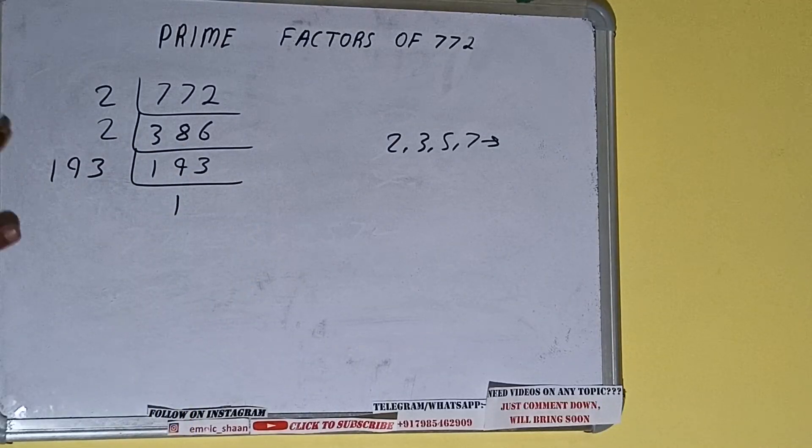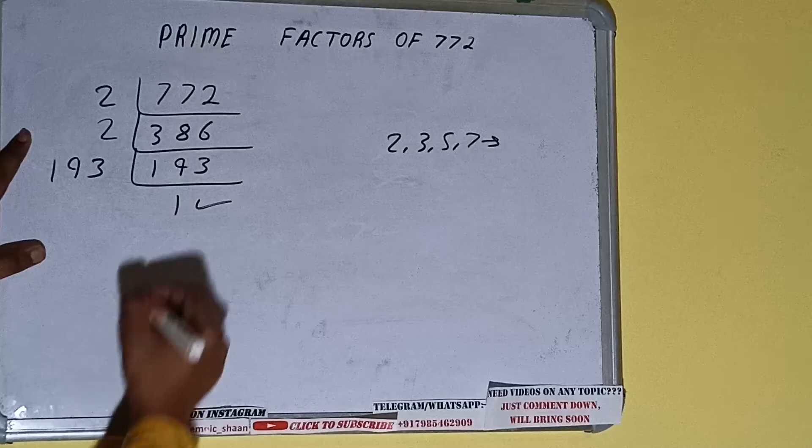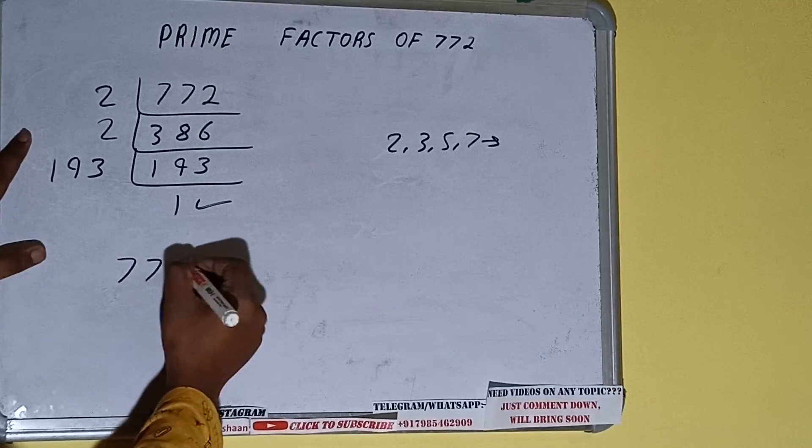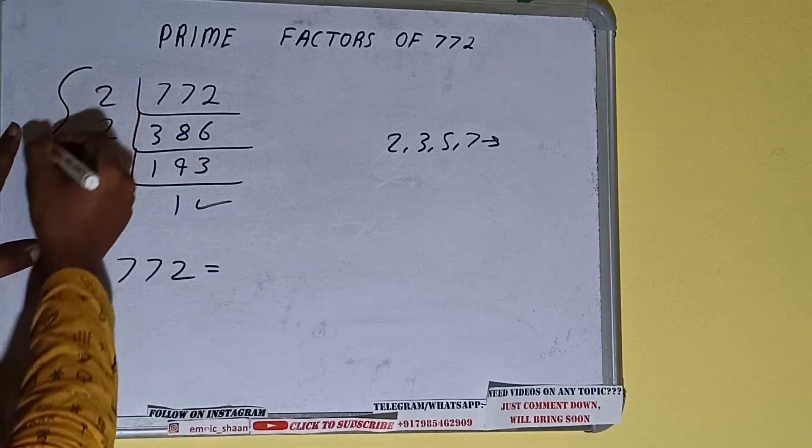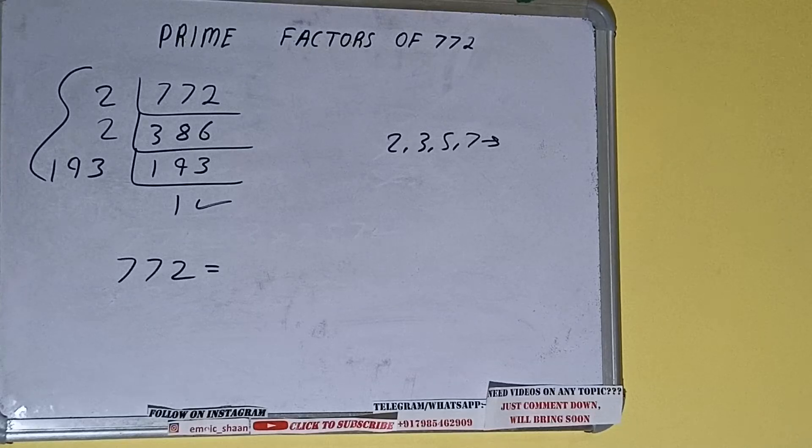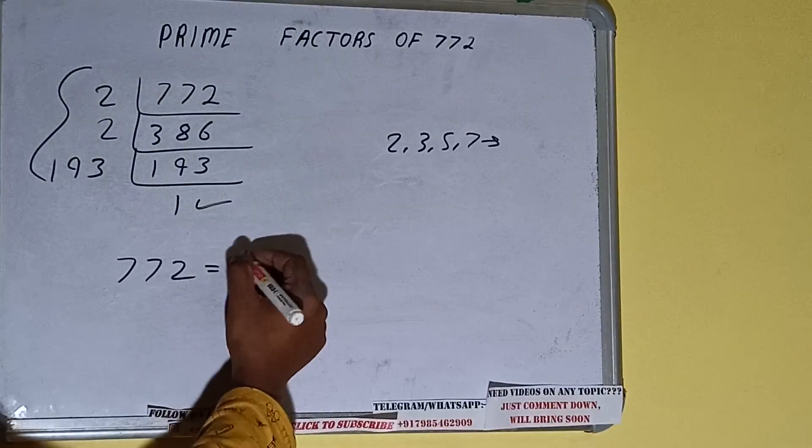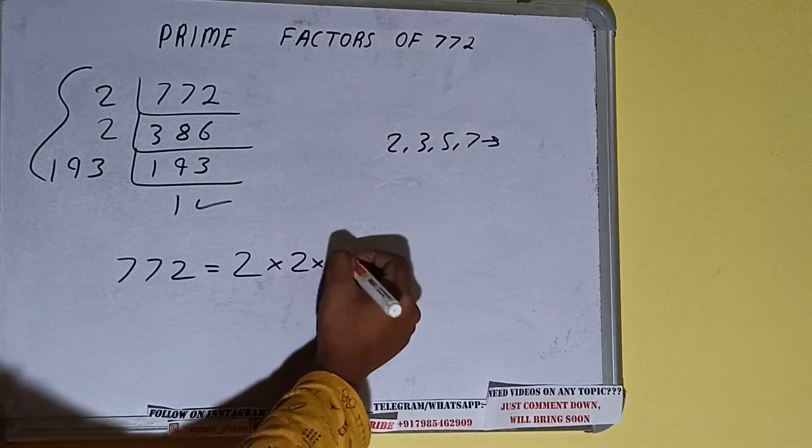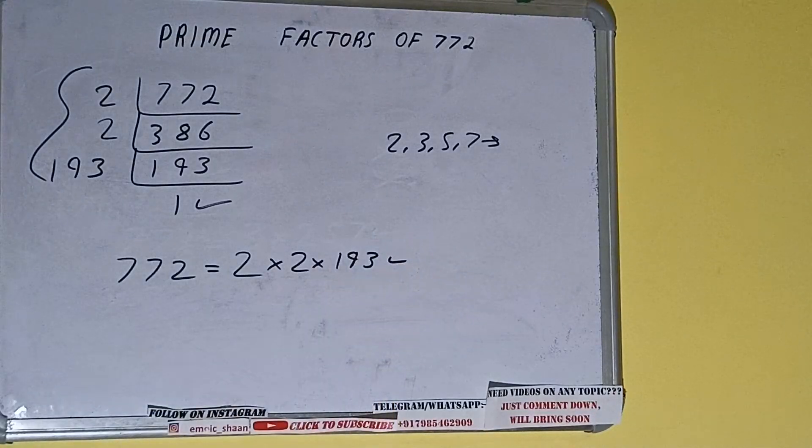Once we get 1, we need to stop and do a last thing. That is, the prime factors of 772 is equal to multiply whatever we have on the left-hand side. That is 2 × 2 × 2 × 193. That will be the answer.